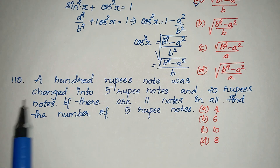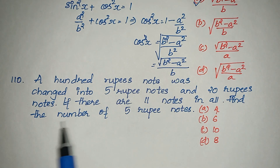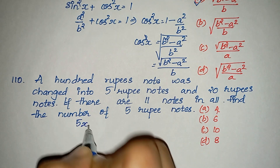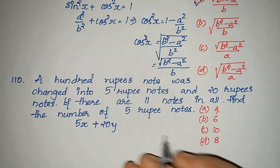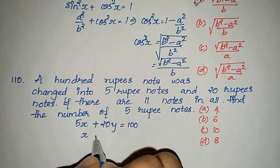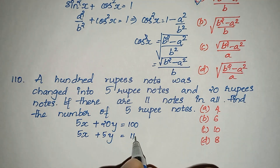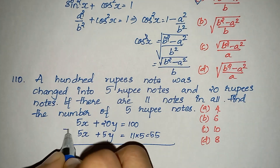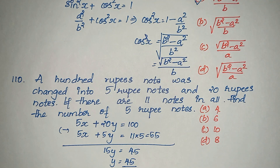Question 110: a 100 rupee note was changed into 5 rupee notes and 20 rupee notes. If there are 11 notes in all, find the number of 5 rupee notes. Let x be the number of 5 rupee notes and y be the number of 20 rupee notes. Then 5x plus 20y equals 100, and x plus y equals 11.